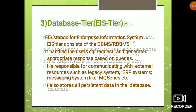The database tier, that is the enterprise information system, consists of database management systems or relational database management systems. The difference between DBMS and RDBMS is that RDBMS defines relationships between data, while DBMS does not. The benefit of using RDBMS is data integrity, which you cannot have in DBMS. It handles the user's SQL requests and generates appropriate responses based on queries. It is also responsible for communicating with external resources such as legacy systems, ERP systems, and messaging systems like MQ series. It also stores all persistent data — data stored on a permanent basis, not temporary.